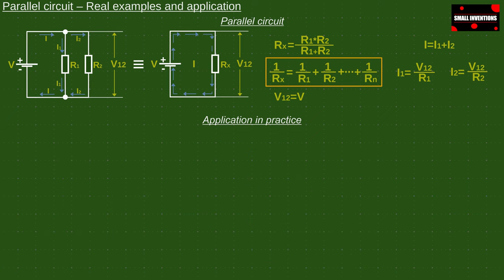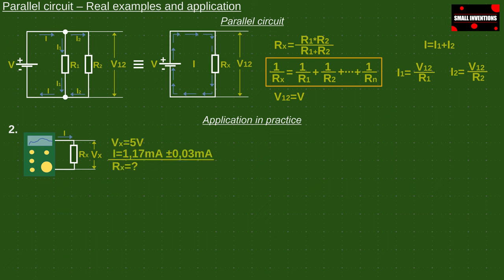In the second example, we will see the actual application of a parallel circuit, as I promised. For example, we need to limit the current to 1.17 milliampers with a tolerance of 0.03 milliampers at a voltage of 5 volts. In the real world we have to use the actual values of the resistors which is sometimes not so easy. But why? Because there are billions of different values of resistors and it is not profitable to have just about every value. Therefore, standardized values of resistors are used and their combinations can give others.